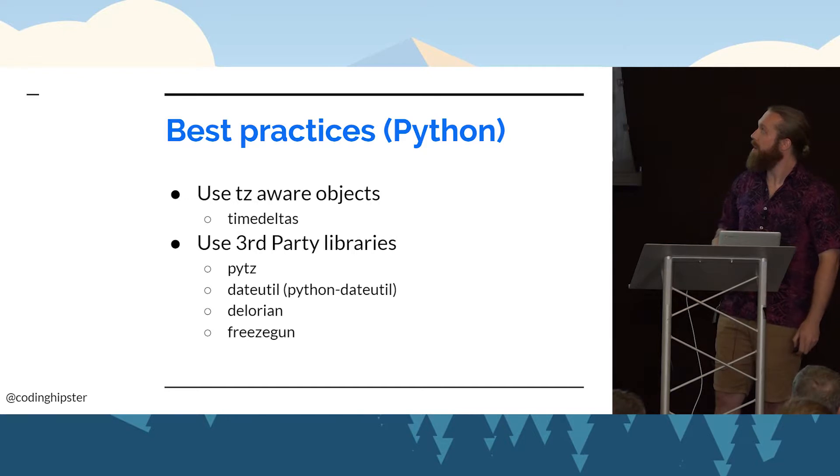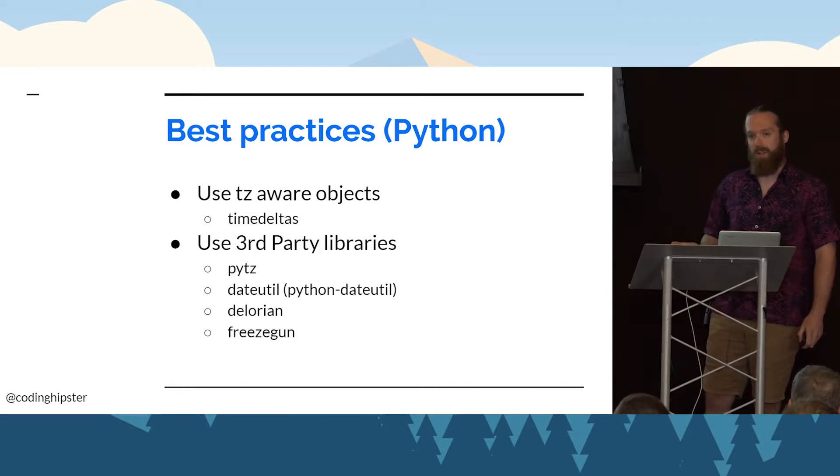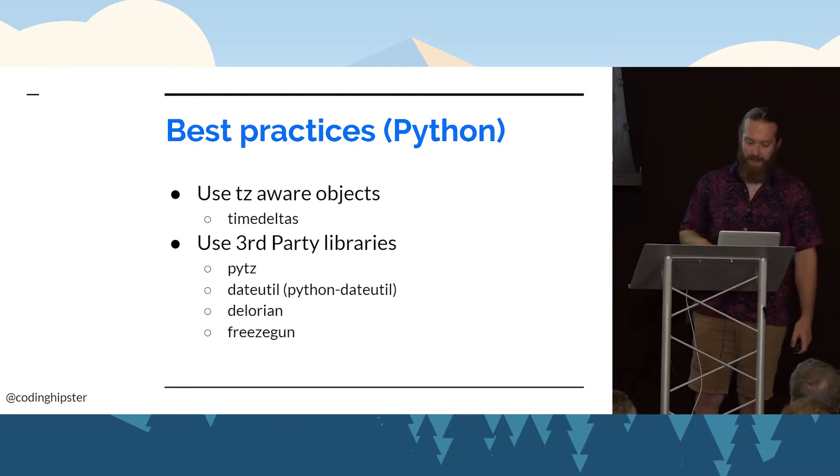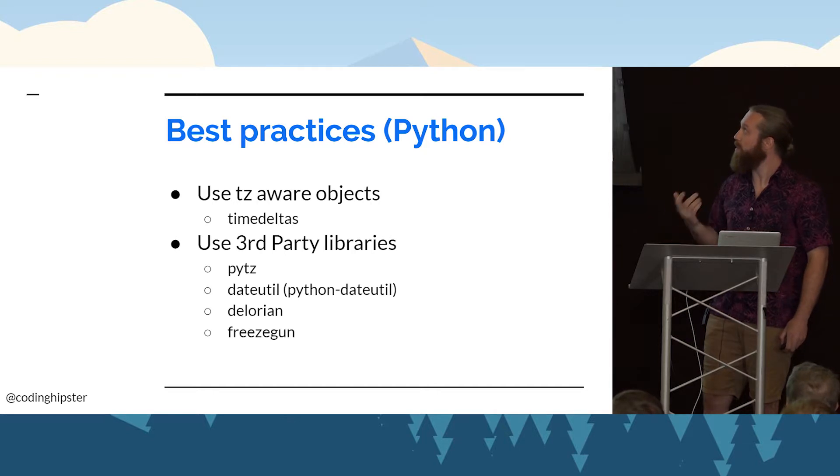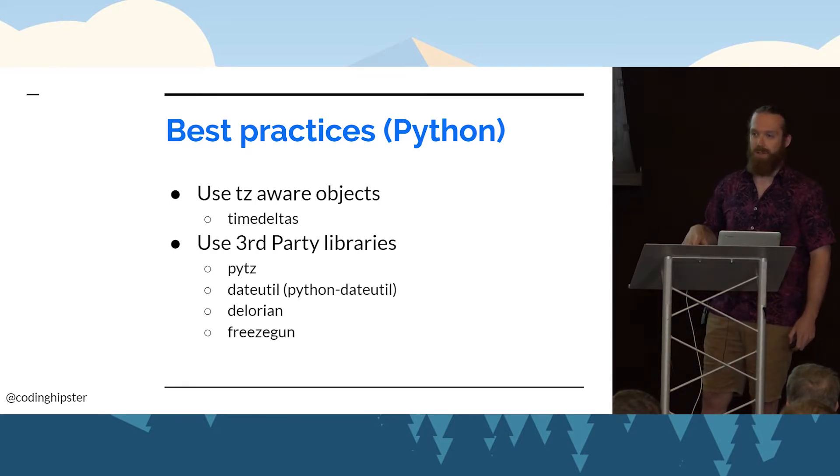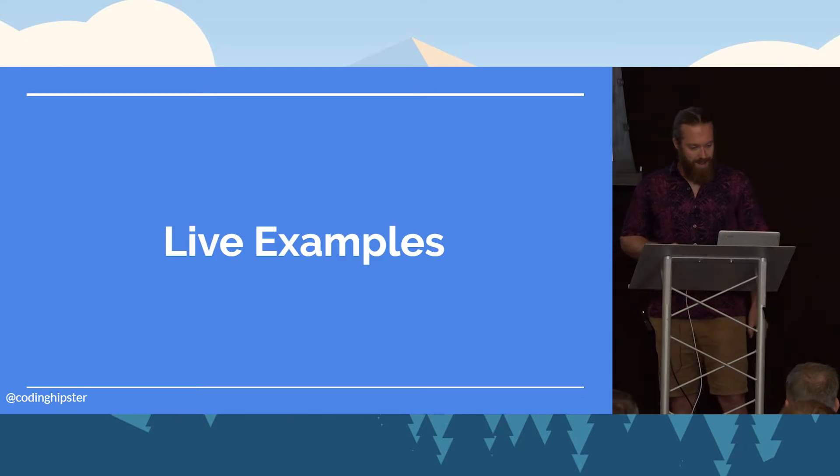So best practices in Python. Try to always use timezone aware objects. Don't use magic numbers as a good example as well. Don't say month plus one. That's going to get you into trouble when you hit December. Day plus one will also get you into trouble the last day of the month. And there's also a ton of good libraries out there for integrating with time zone objects. PYTZ is kind of the gold standard for time zones. DateUtil has a lot of nice functions. I already mentioned freeze gun for testing. And then DeLorean, which is one I actually haven't used, but I've read good things and has a really great name.